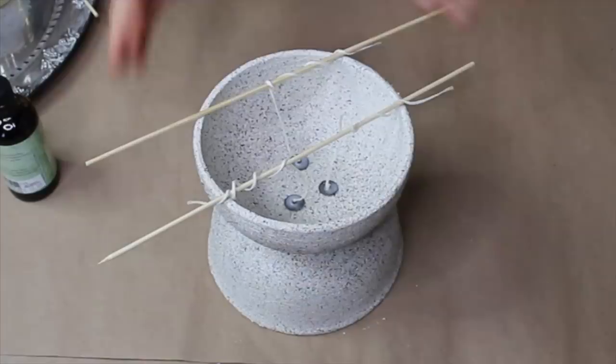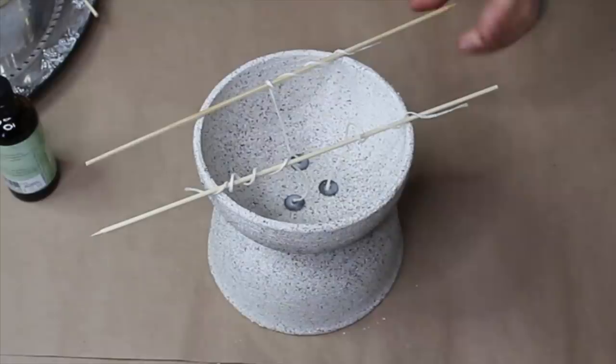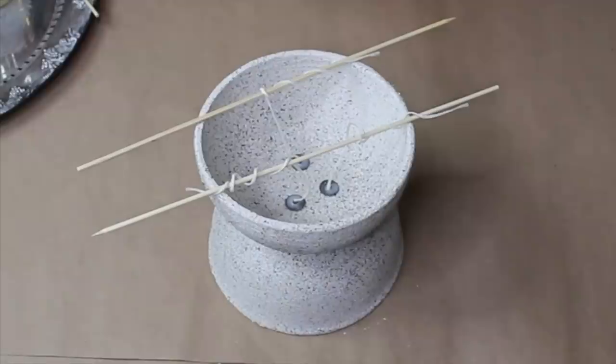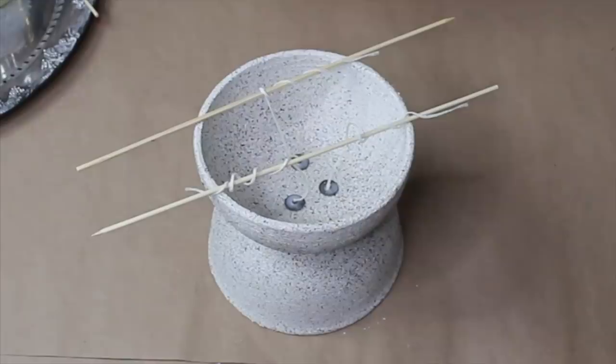After I melted my candles and took the wicks out and placed them where I wanted, I'm using skewers to secure it in place. I'm going to be adding my melted wax into this. I'm actually going to be using a scented lavender because I really want to give this a nice scent to it.